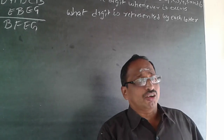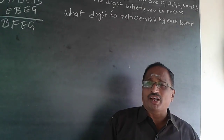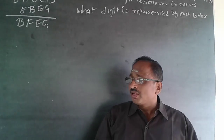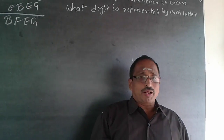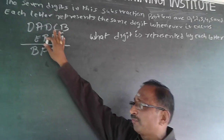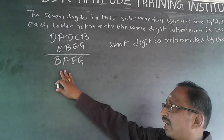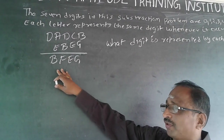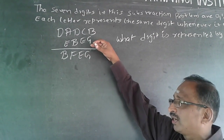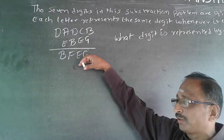These are all puzzle type or logical reasoning type questions. What happens is, if this is a 5-digit number minus a 4-digit number, I am getting a 4-digit number — a 5-digit number minus a 4-digit number gives a 4-digit number.